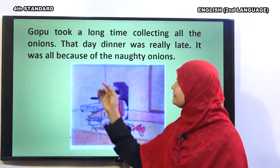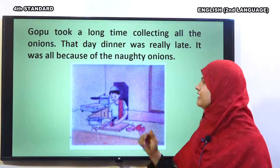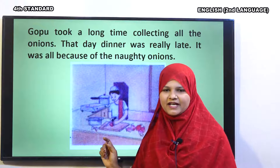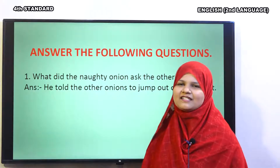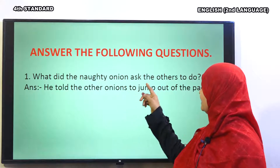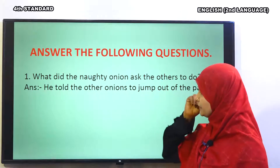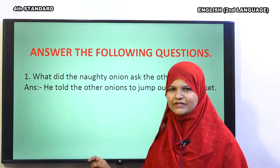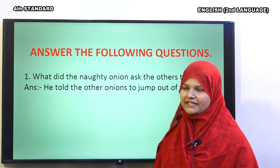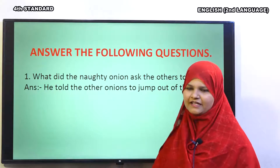Gopu took a long time collecting all the onions. Onions bahut saare konon mein phaili hui thi, is liye Gopu ko bahut waqt laga. That day, dinner was really late. In onions ki wajah se us din khana banane mein Gopu ko bahut dair lag gayi. It was all because of the naughty onions. Shariir piyaaz ki wajah se. Now I will ask some questions. What did the naughty onion ask the other onions to do? Very good. He told the other onions to jump out of the packet.